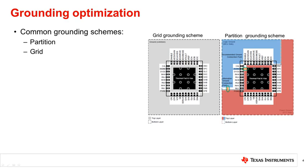The appropriate grounding technique depends on the design application. For high power applications, it is recommended to use the partitioning ground scheme. For low to mid power applications, the grid ground scheme is generally recommended. The left image shows a grid ground scheme where the ground is common between the digital and power parts of the board. The right image shows a partition ground scheme where the digital or logic ground and the power ground are separated, connected at a single point indicated by the orange lines in the image.